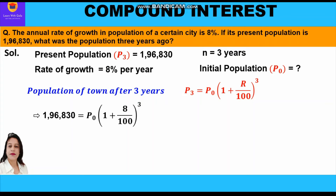Putting in the values: 196,830 = P₀ × (1 + 8/100)³. Simplifying 8/100, we get 2/25. Taking the LCM, 25 + 2 = 27, so we write: 196,830 = P₀ × (27/25)³.